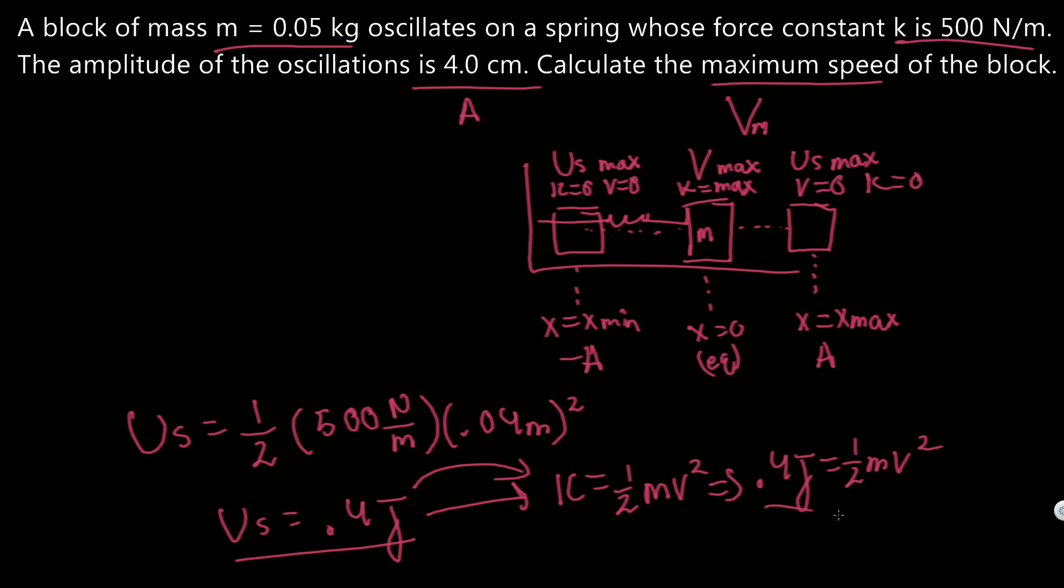Now we have this expression here. It's asking for the maximum speed, so the maximum energy for maximum speed. We're going to solve for V. Let's isolate V by dividing the expression by one half, or multiplying by two, and divide by m. So we got v squared equals 2 times 0.4 joules divided by m. We got to square root that to find V, which gives us V equals the square root of 2 times 0.4 over the mass, which is 0.05 kilograms.